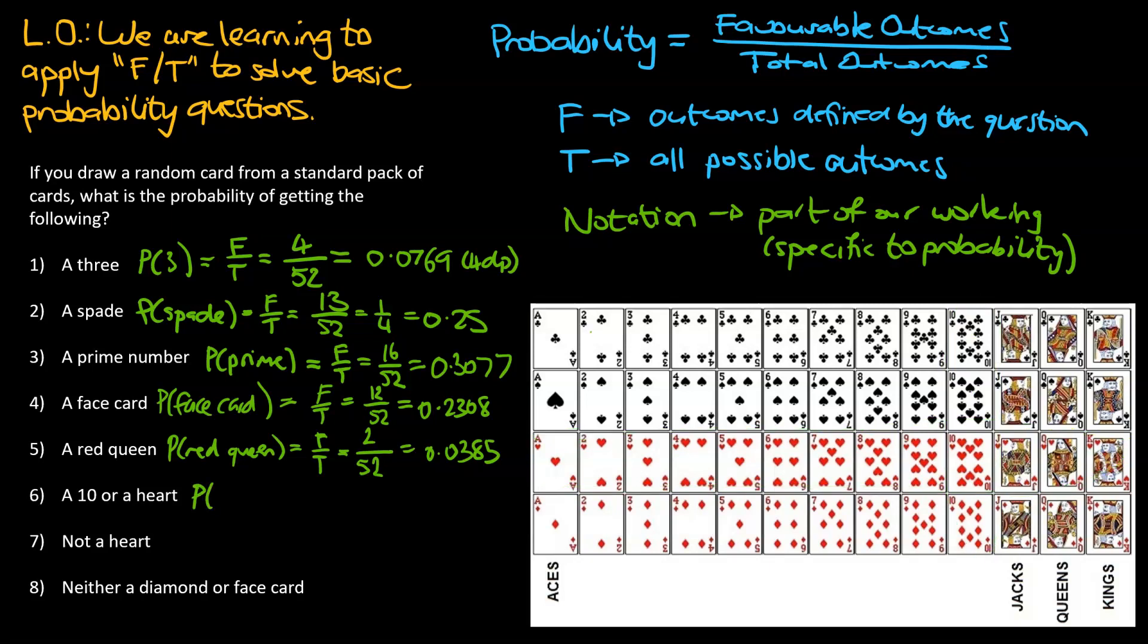So probability of a 10 or a heart, F over T. There are 52 cards in total. We only care about the 16 of them that meet our favorable criteria. Put that into a calculator. 16 divided by 52. That gets us to 0.3077.